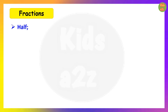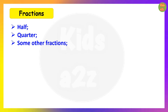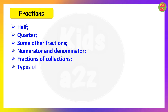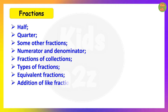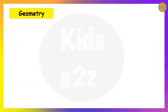The next chapter is Fractions. Topics include: unit fractions such as one third, one sixth, one fifth; numerator and denominator; fractions of collections; types of fractions — that means like and unlike fractions and unit fractions; equivalent fractions; addition of like fractions; and subtraction of like fractions.